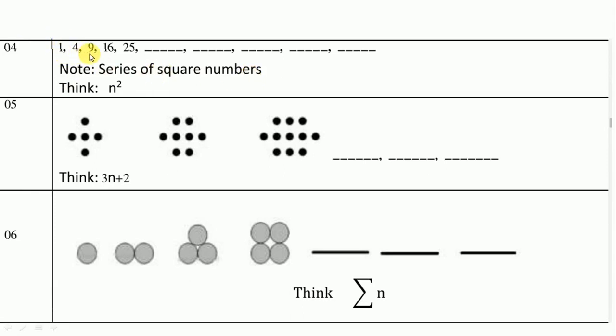So 1² is 1, 2² is 4, 3² is 9, 4² is 16, 5² is 25, 6² is 36. Next is 7², 7×7 the 49, next is 8×8 the 64.